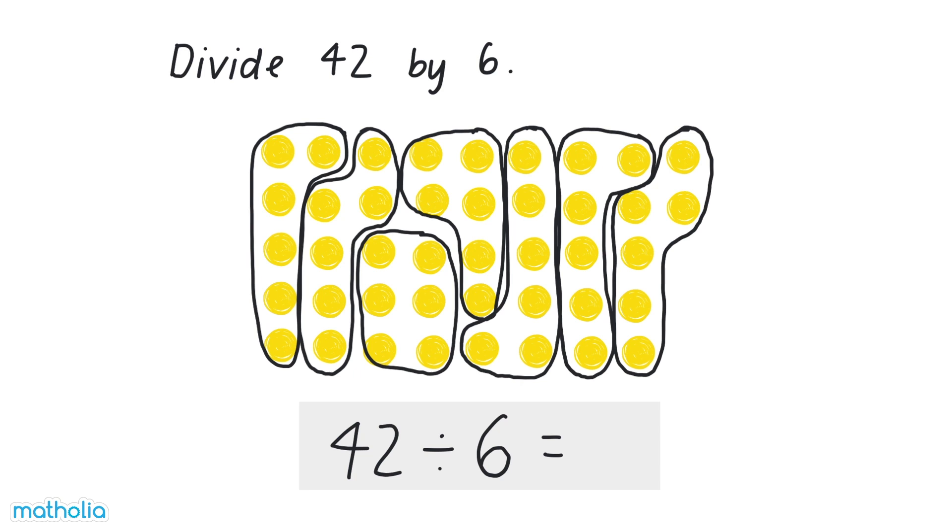There are seven groups of six dots, so 42 divided by six equals seven.